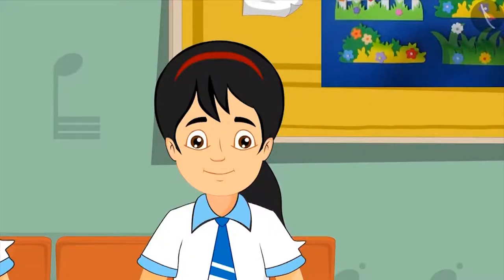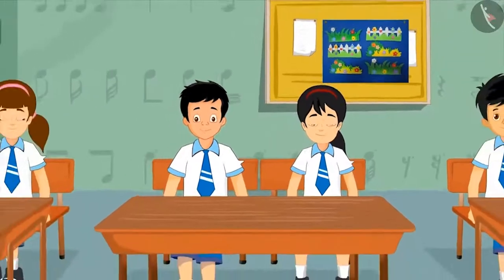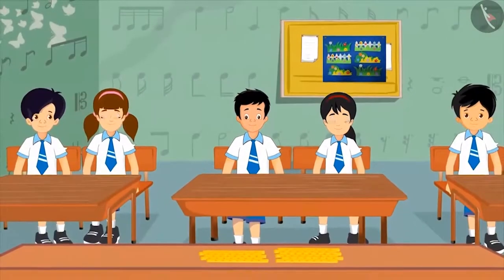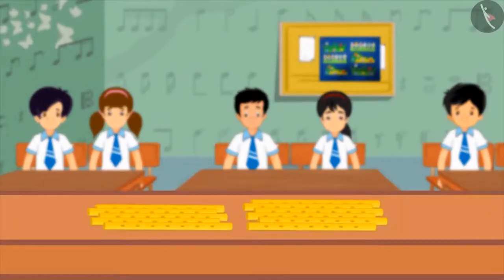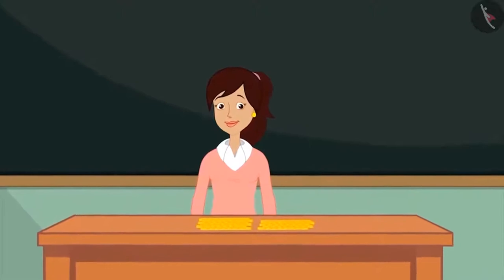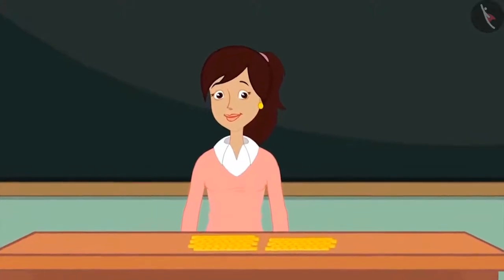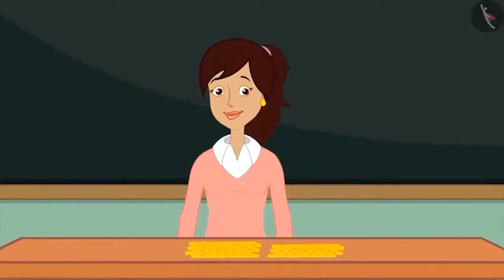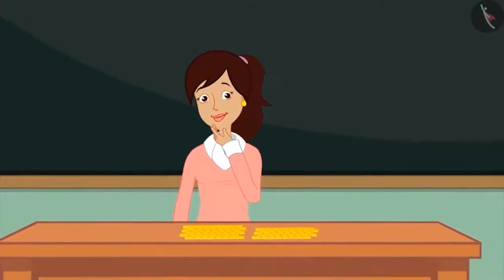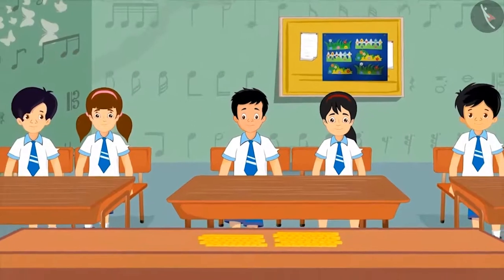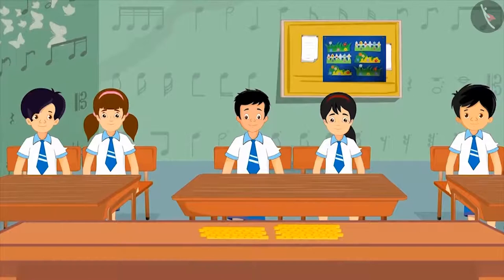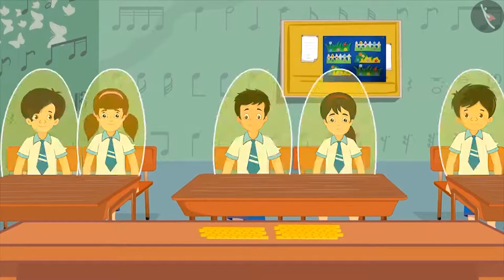Today Pinkie and her friends have their first music class. In the class, many flutes are placed on the table. The teacher has to give a flute to each child. But for this, she should know how many children are there in the class. This means that she should know the total number of children.